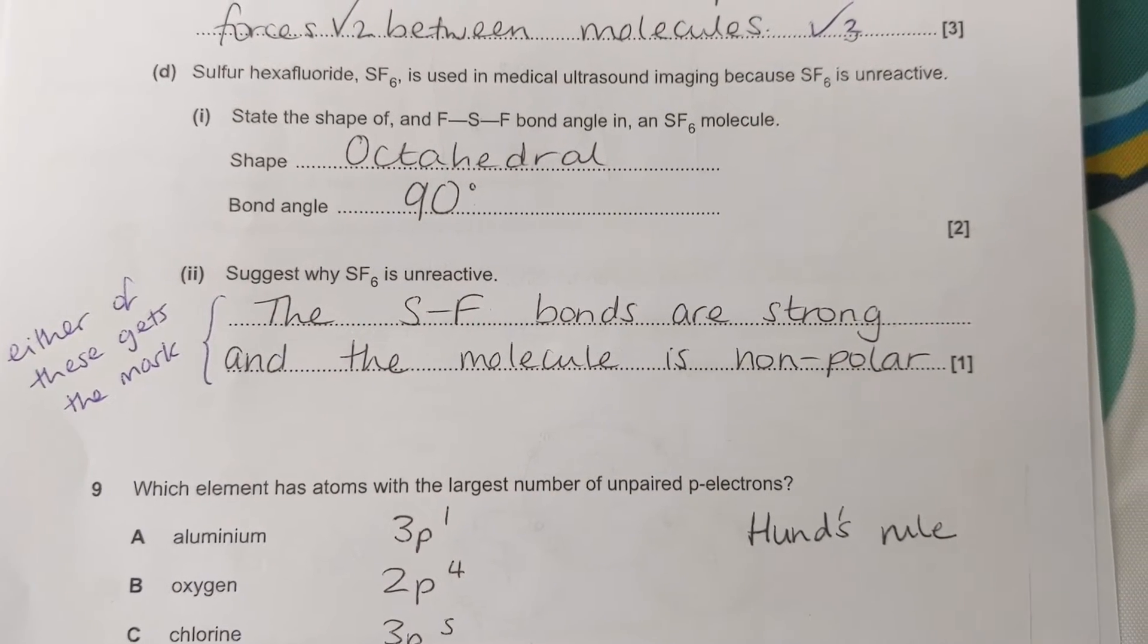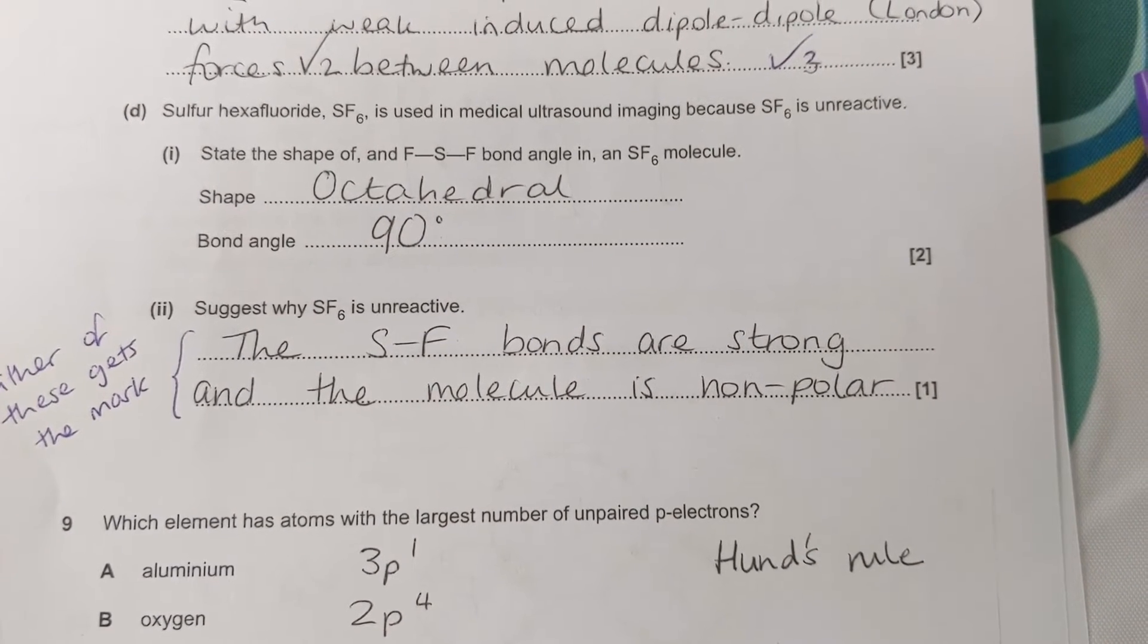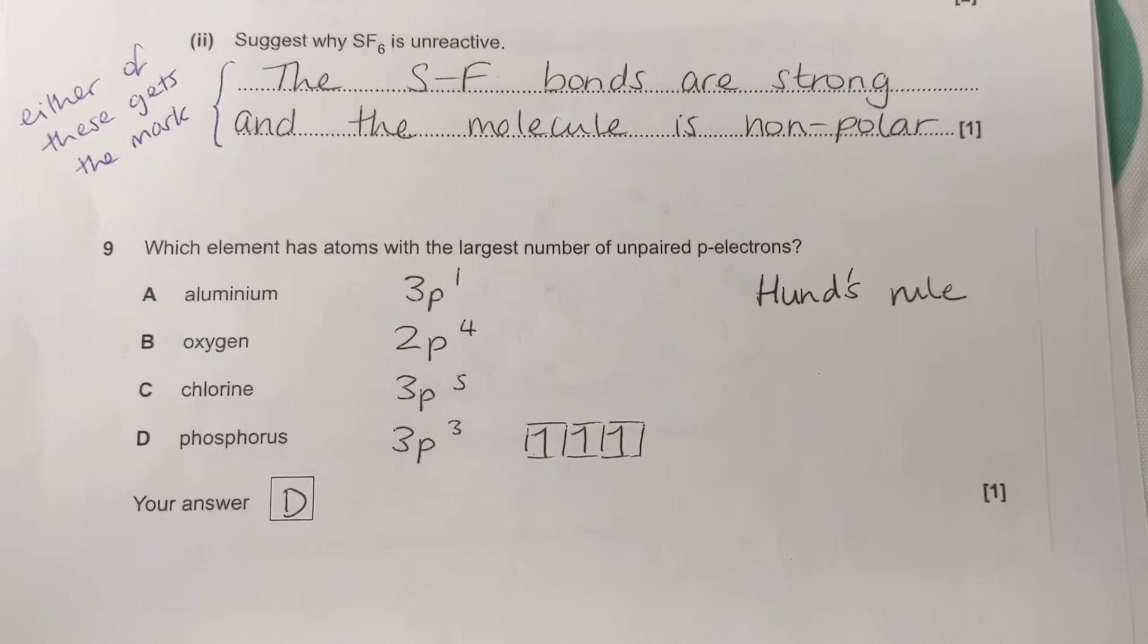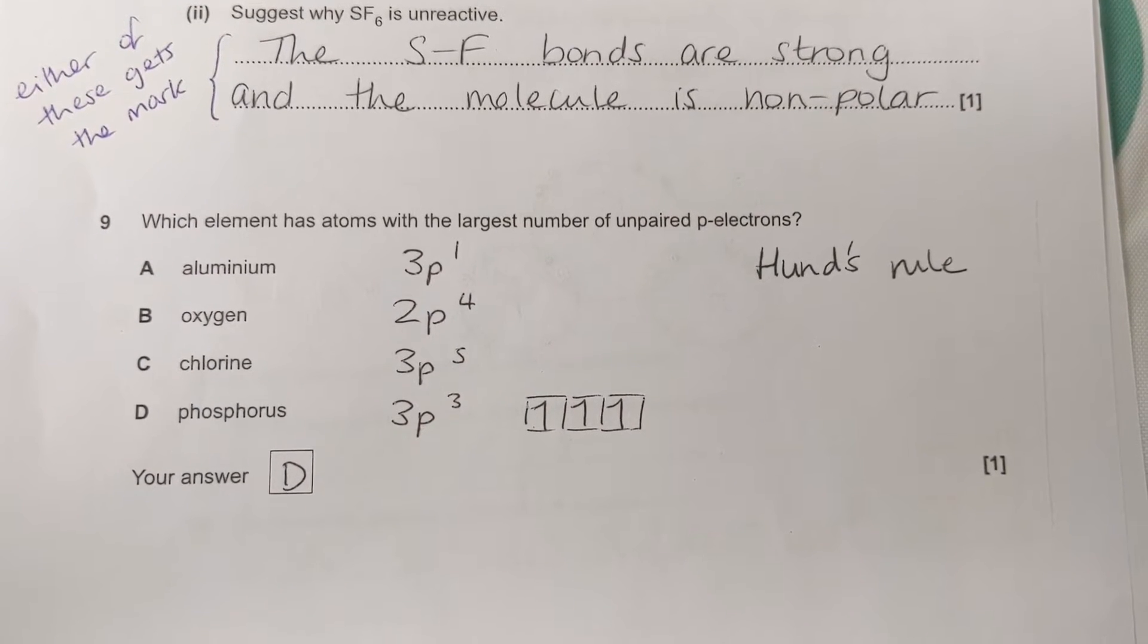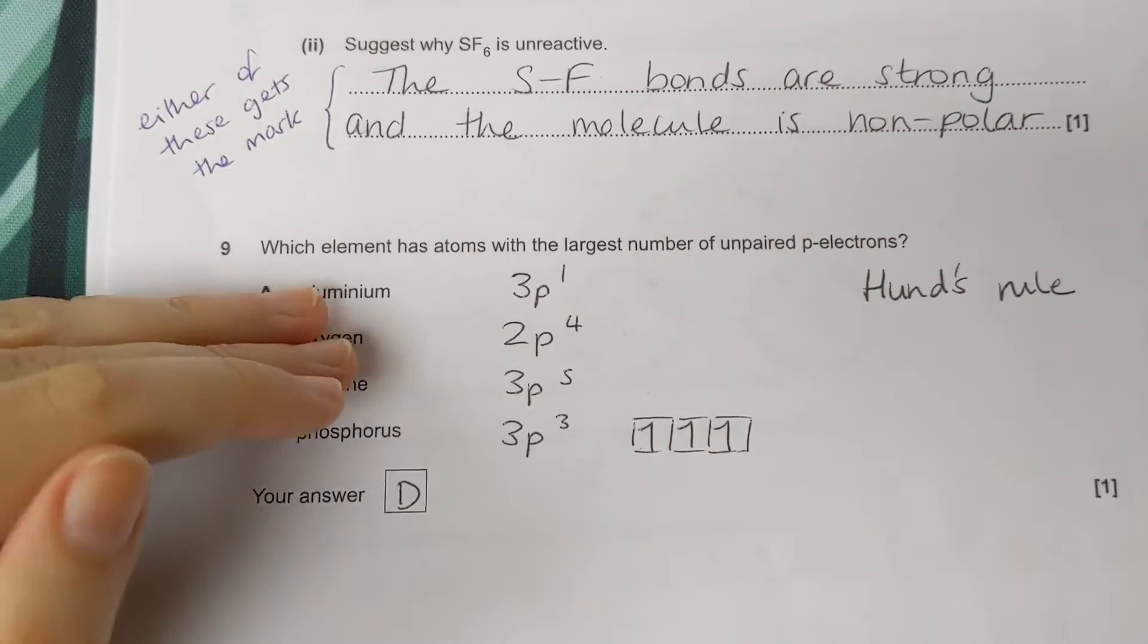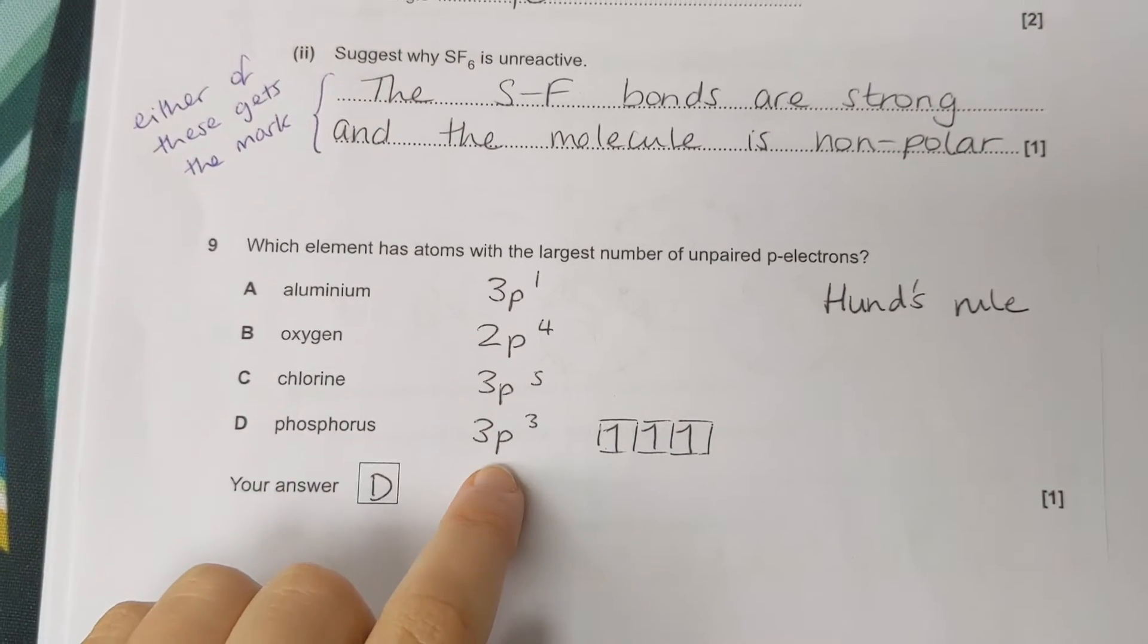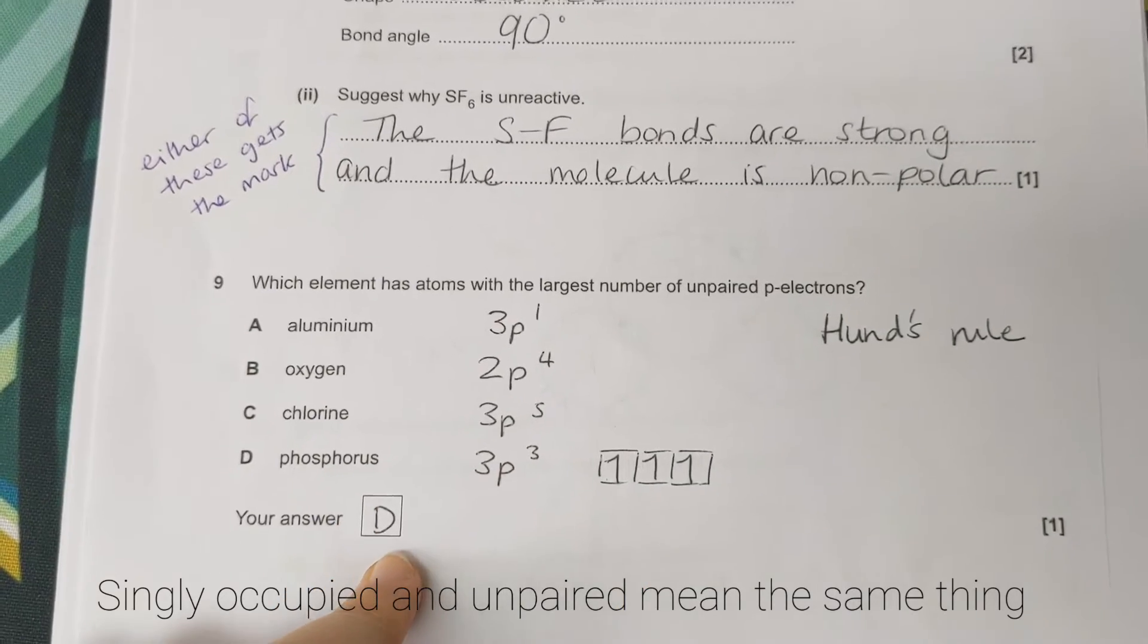Then it's asking us why it's unreactive. So a common reason for anything to be unreactive is that the bond enthalpy is high, or we could say the bonds are strong. We could also say that this molecule is nonpolar. Question nine is about Hund's rule. So that's about how in p orbitals and d orbitals, electrons go in singly first, and then they start pairing up. So we've got four elements. You might want to write out the electron configuration to help you. These are each of the three p orbitals in a p subshell. And phosphorus is the one with three singly occupied p orbitals in its p subshell. So the answer is D, phosphorus.